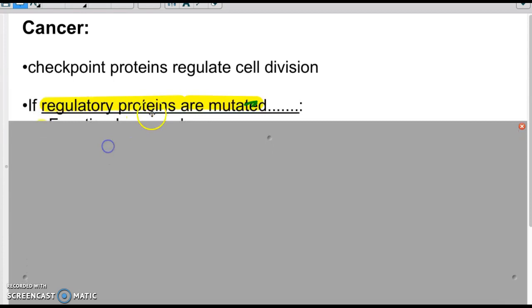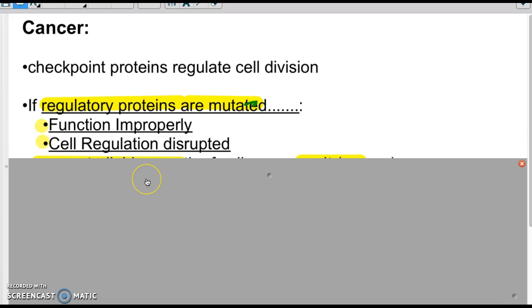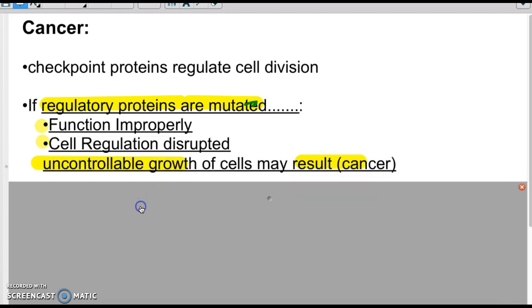And so what could have caused this? Well, maybe the proteins, those cyclins or those growth factors, are mutated. If they're mutated, then that means they're not functioning properly. They're not going to regulate correctly. It's going to be disrupted. And you might see then uncontrollable growth. And that's what cancer cells are. They're uncontrollable growth of cells that do not stop growing.